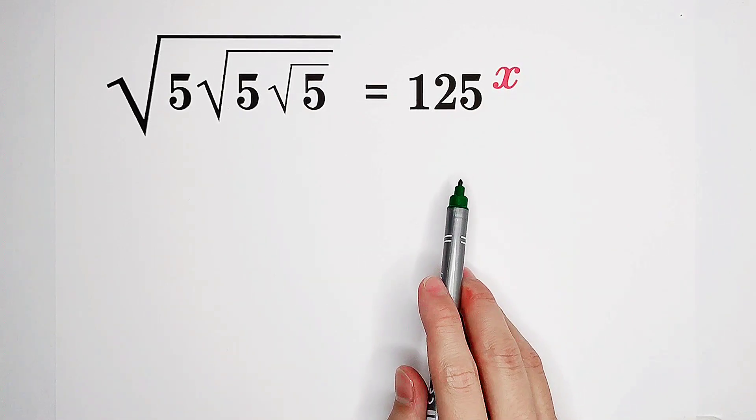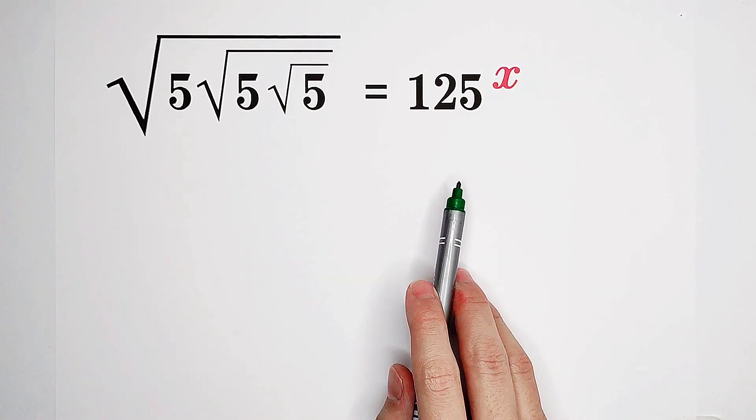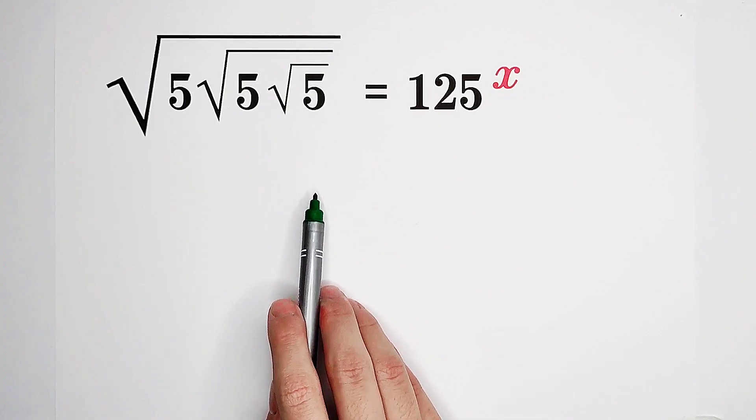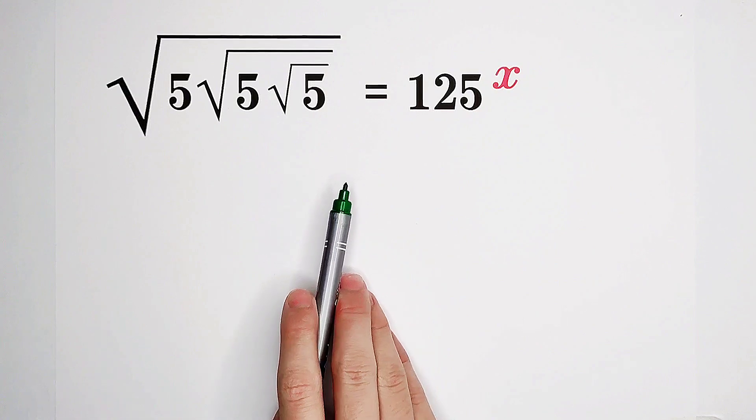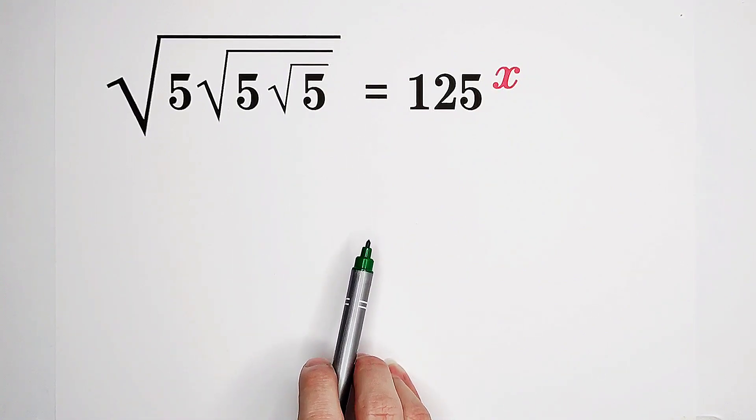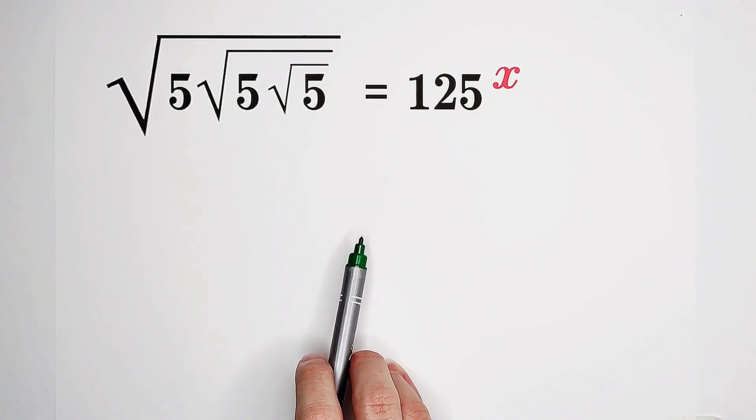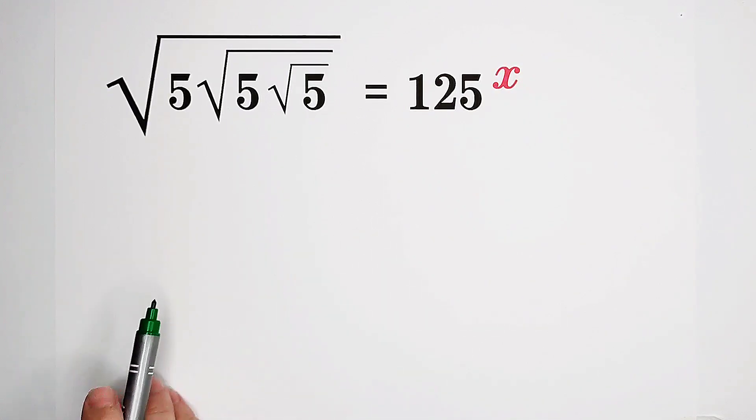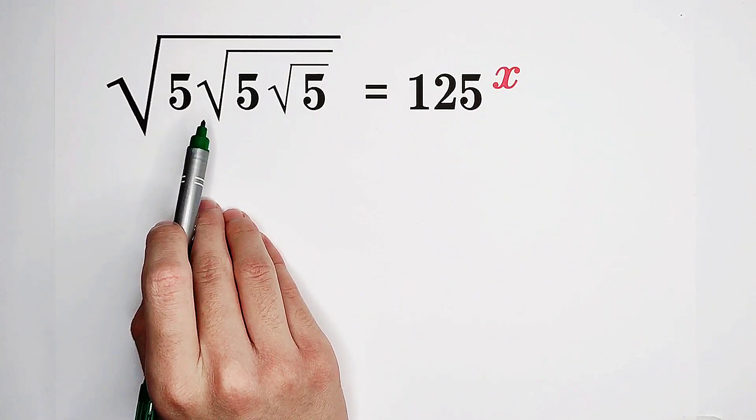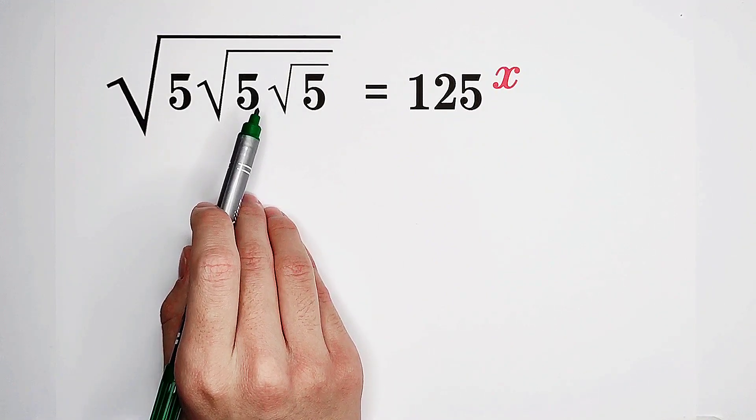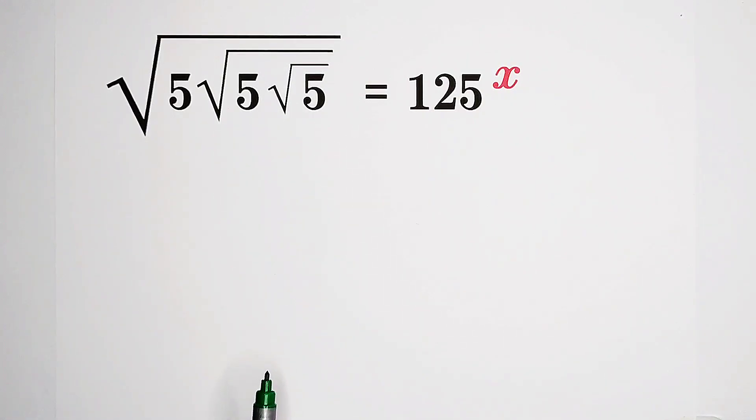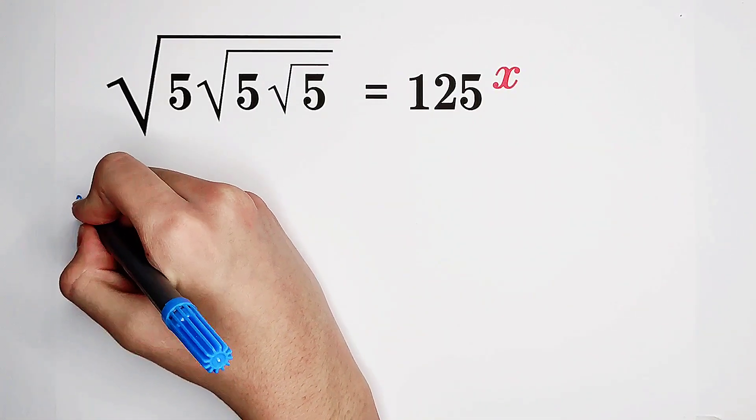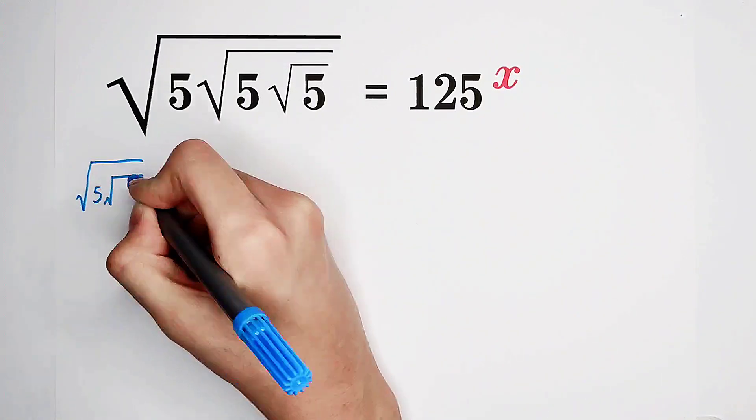Solve for x. This looks complicated, horrible, ugly. But you'll see the radical sign cannot frighten us at all. Square root of 5 times square root of 5 times square root of 5. We can separate these three sections. Now let's do it.